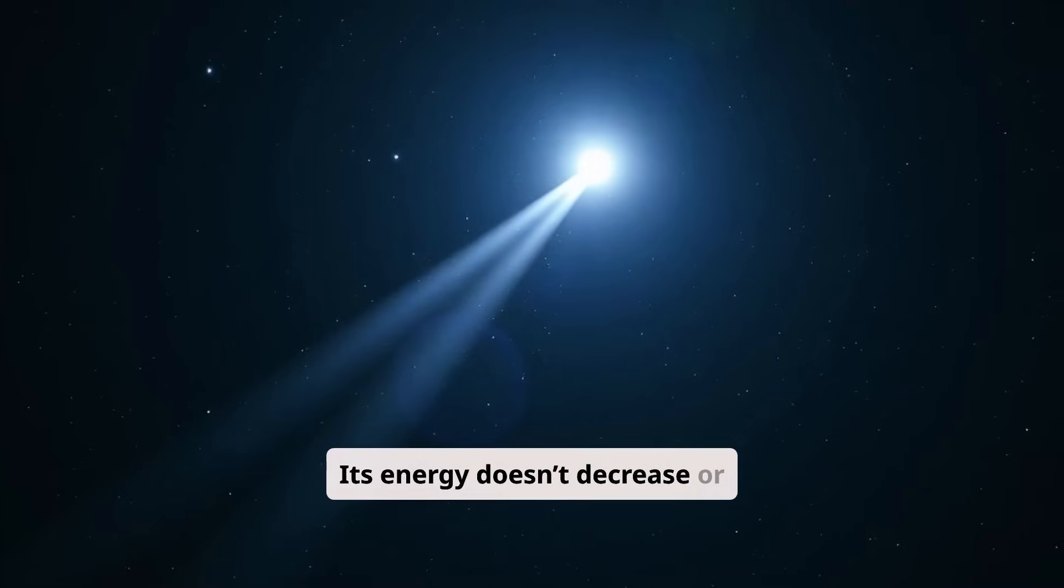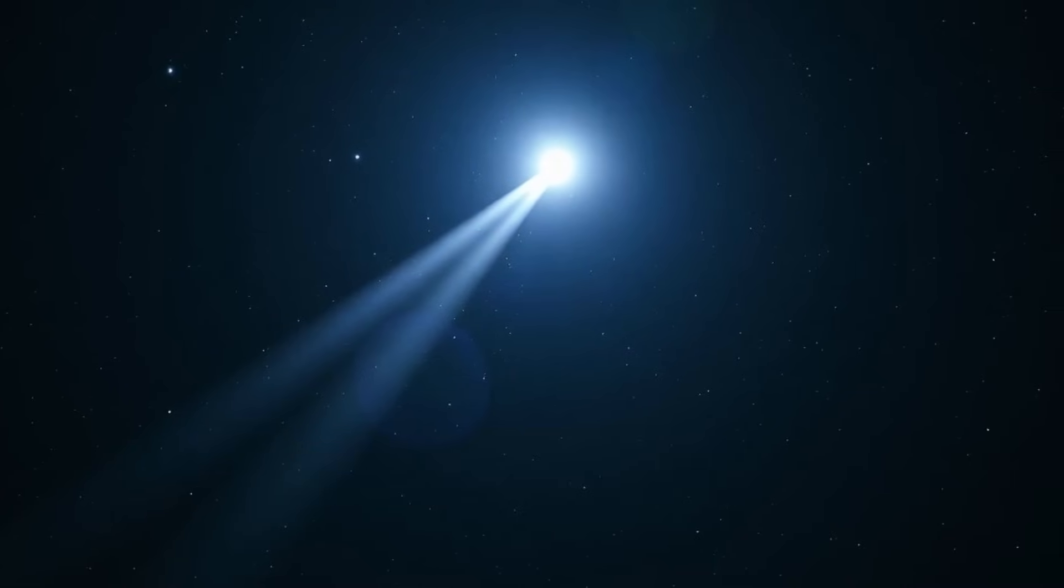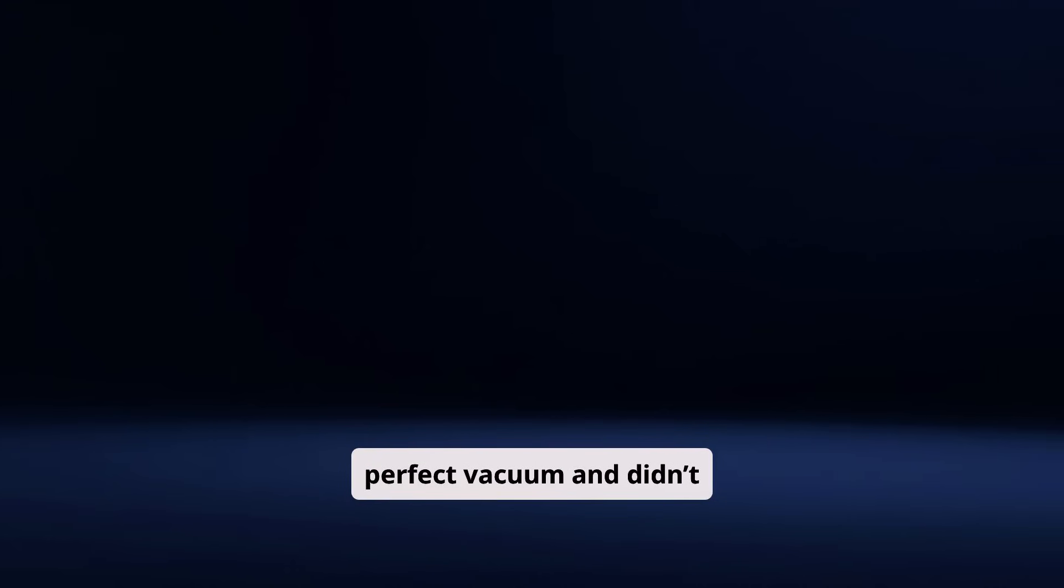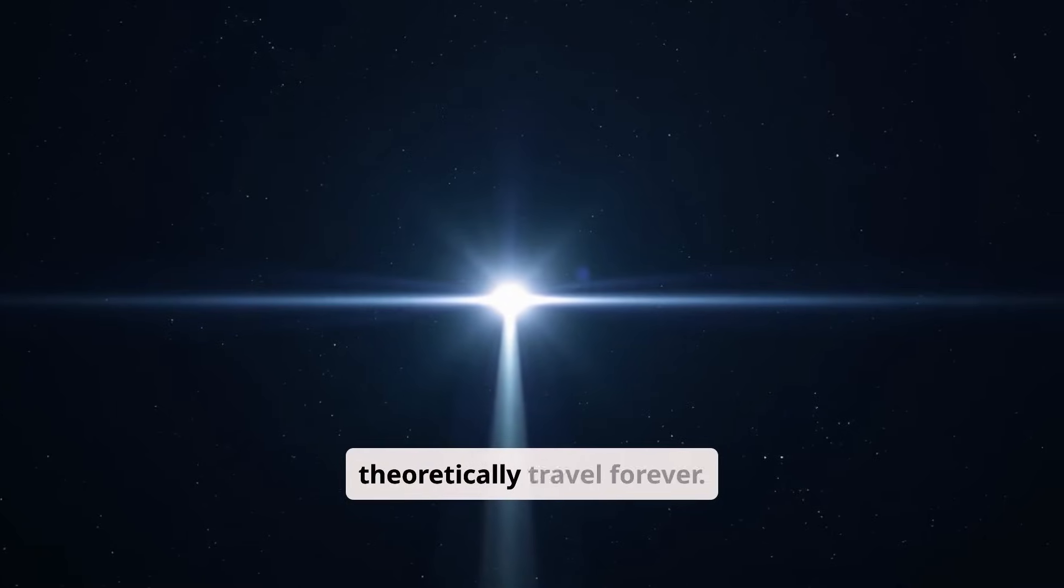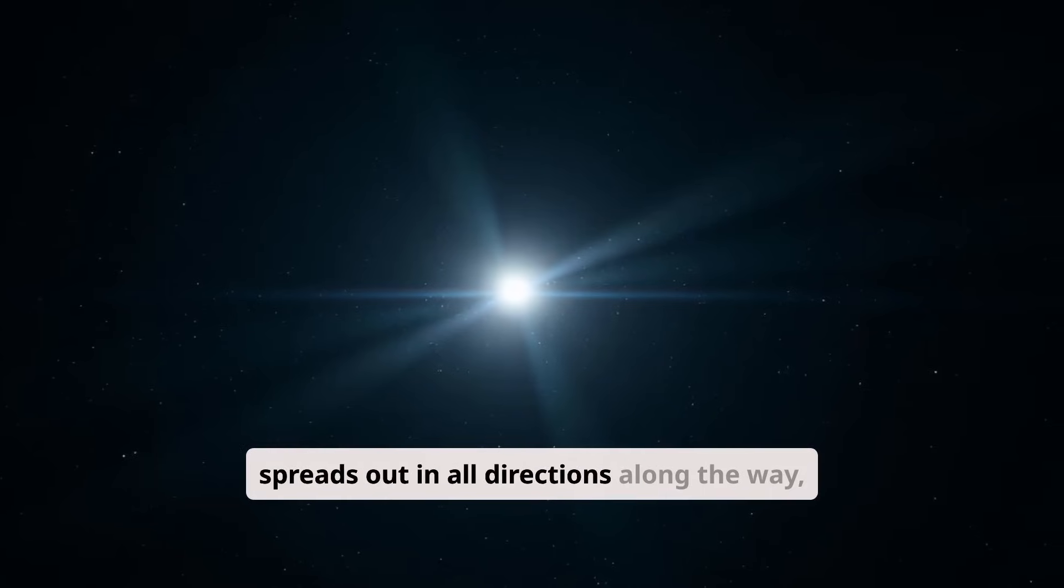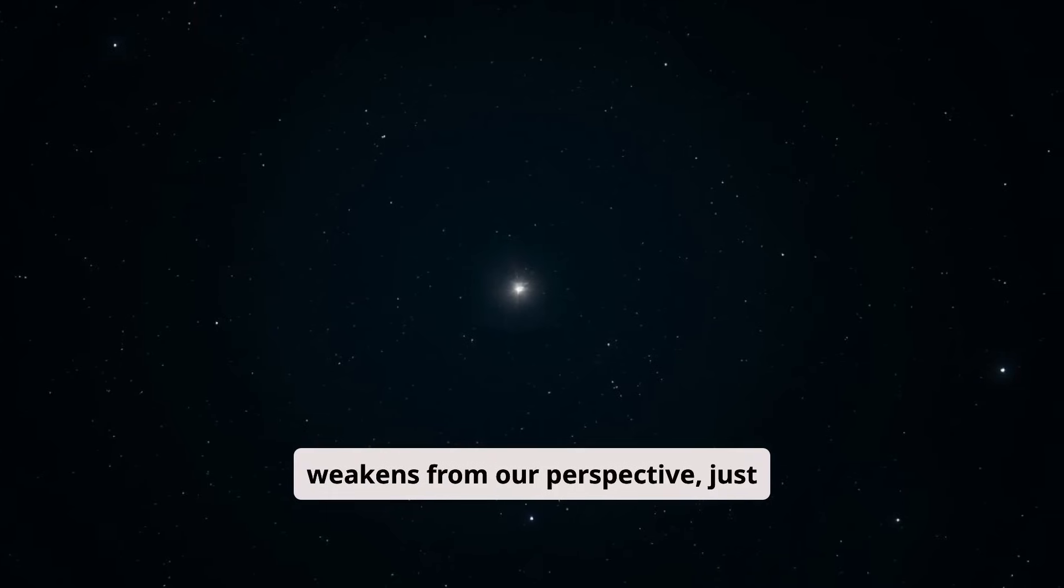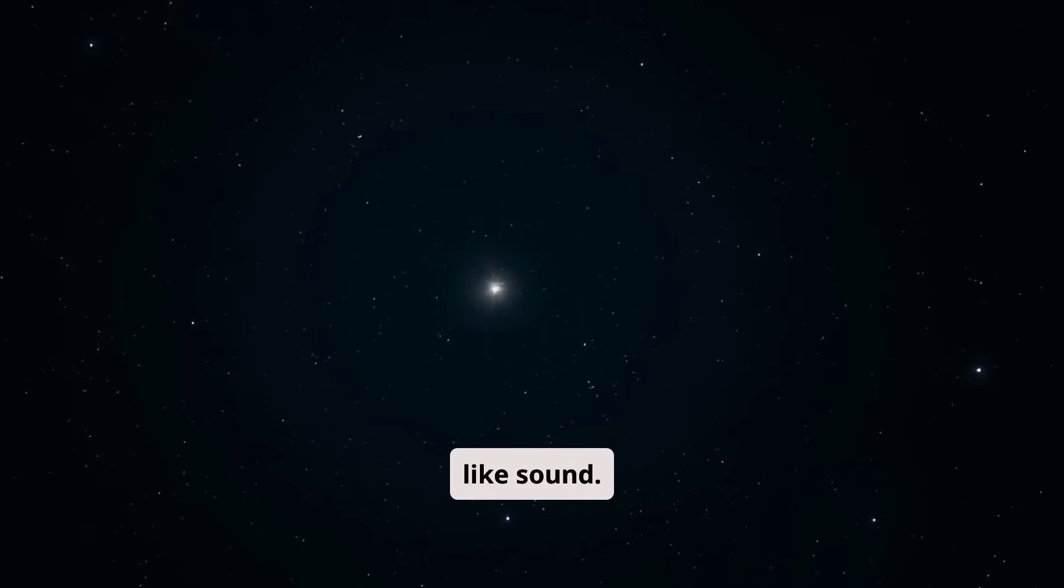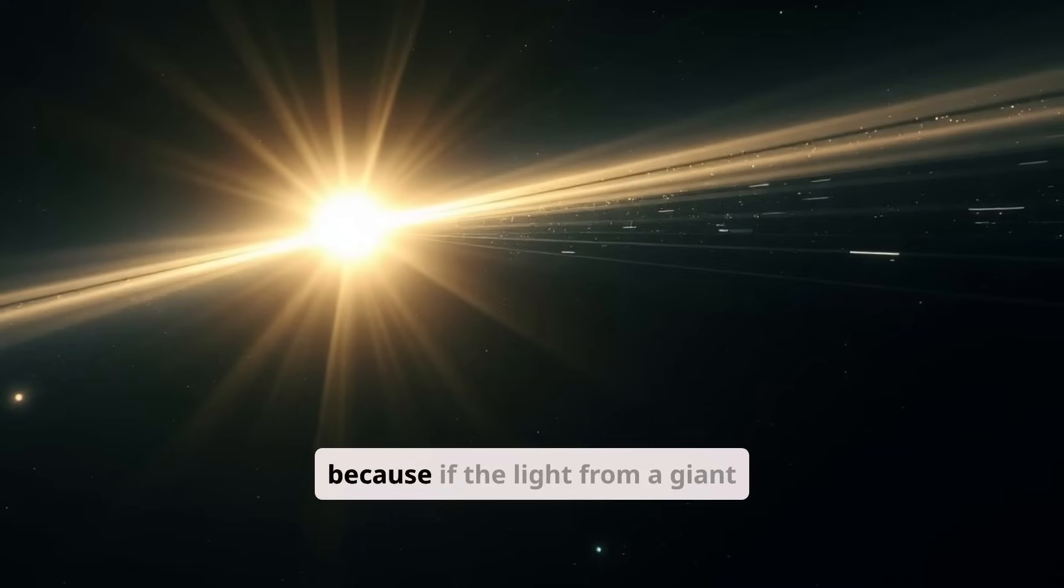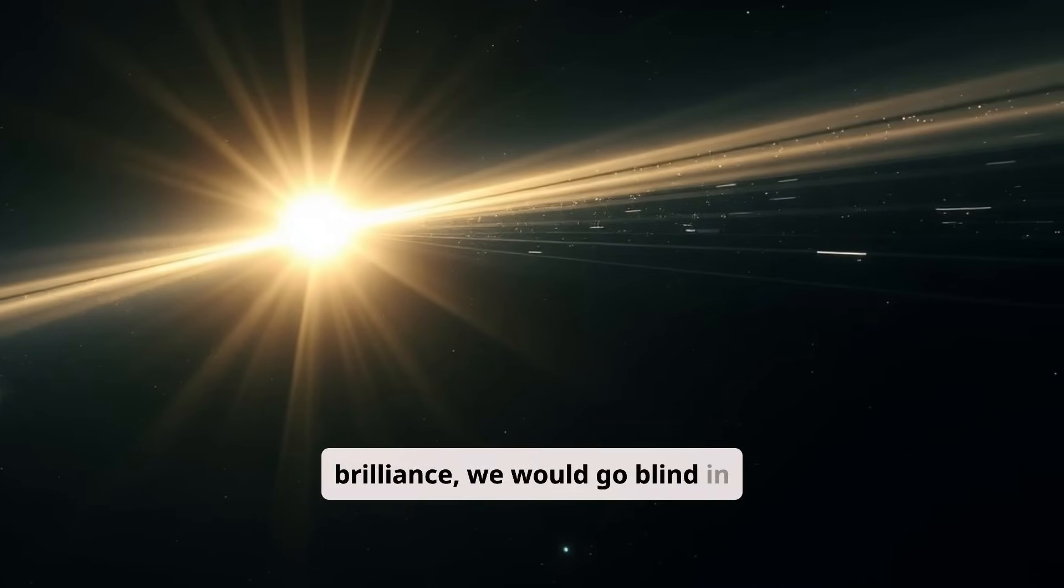Its energy doesn't decrease or disappear, regardless of how far it has already traveled. If light were to travel through a perfect vacuum and didn't encounter any object, it would theoretically travel forever. However, since it spreads out in all directions along the way, the intensity of the source weakens from our perspective, just like sound. Which is actually a good thing, because if the light from a giant star reached us in all its full brilliance, we would go blind in an instant.